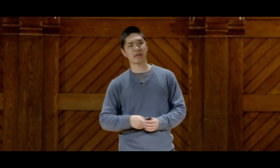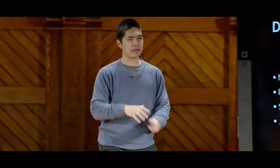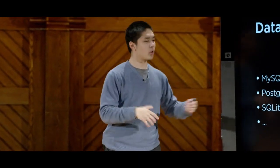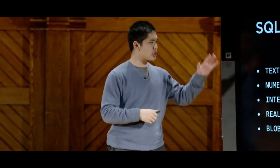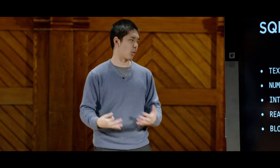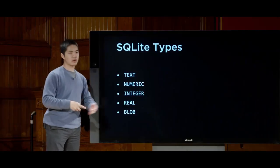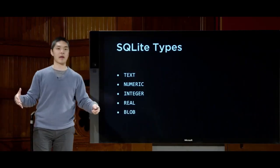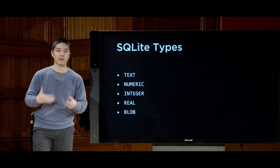As we begin to store data inside of a SQL database, each piece of data has a type — in the same way that in Python we have types for various different kinds of data. SQL too has types that represent various different categories of information you might want to store. SQLite has a fairly short list of basic types. It supports text for strings — something like a city name, for instance, might be stored as text.